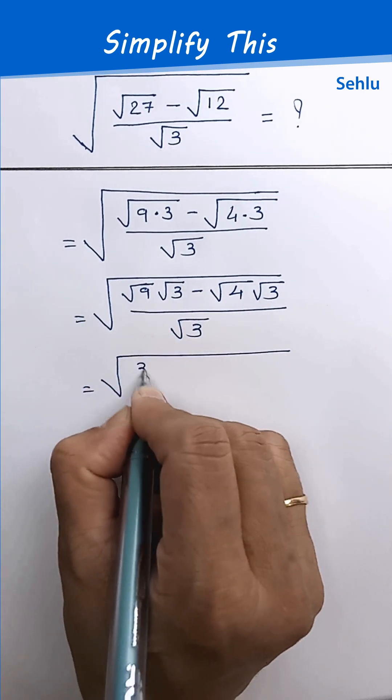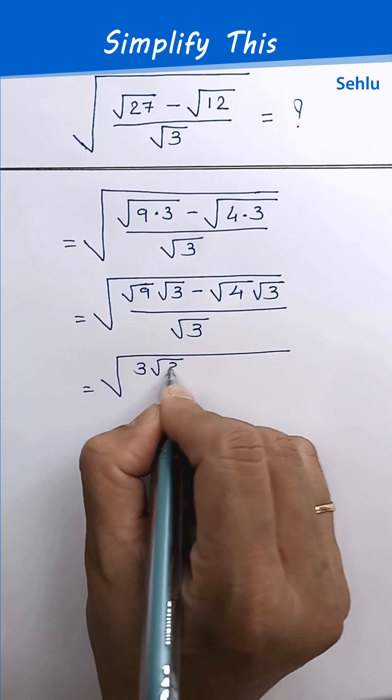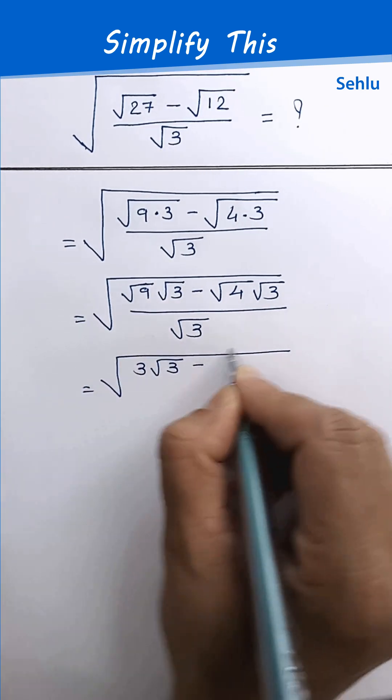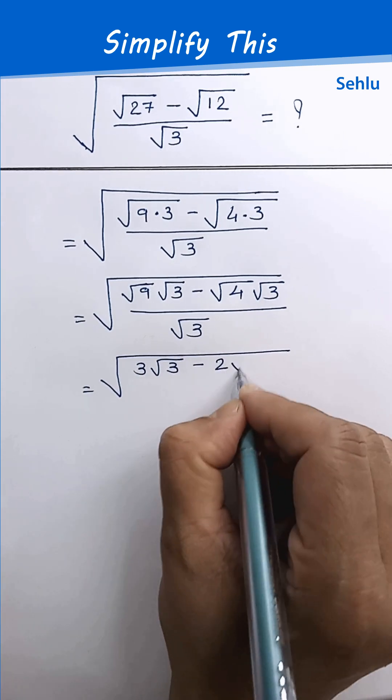Square root of 9 is 3. So we have 3 times square root of 3, minus — square root of 4 is 2 — so minus 2 times square root of 3, all over square root of 3.